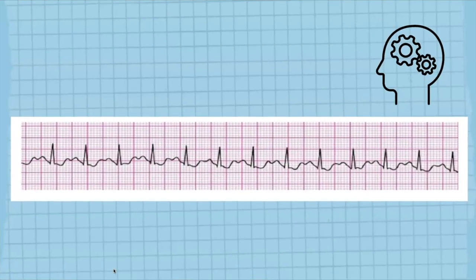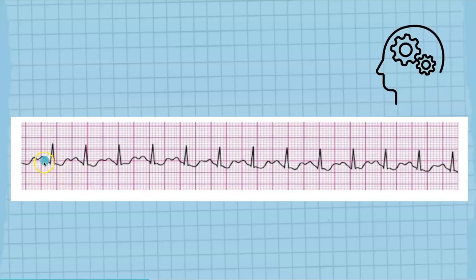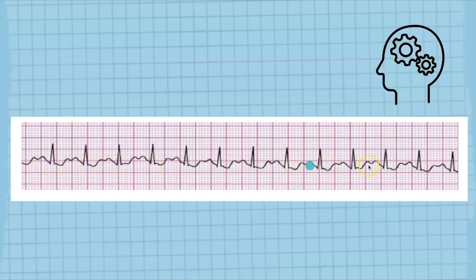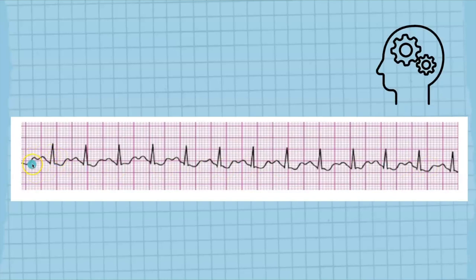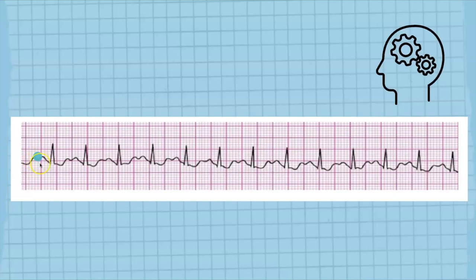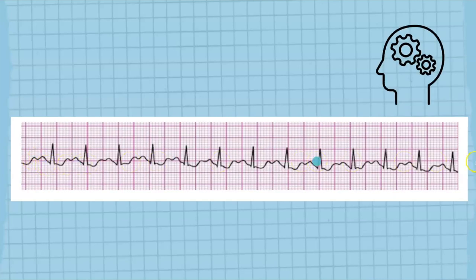The next rhythm that we have — is there a P wave before each QRS? Yes, there is. But the rhythm is going so fast that the P wave is about to be overtaken by the T wave. But so, are you seeing a P wave? Yes, we are seeing a P wave. Obviously this is pretty fast.